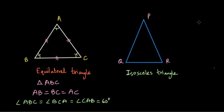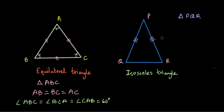On the right hand side we have triangle PQR, and it's an isosceles triangle. By definition, two of the sides of triangle PQR are equal. Whenever two sides of any triangle are equal in length, it's called an isosceles triangle, and in this case PQ is equal to PR.